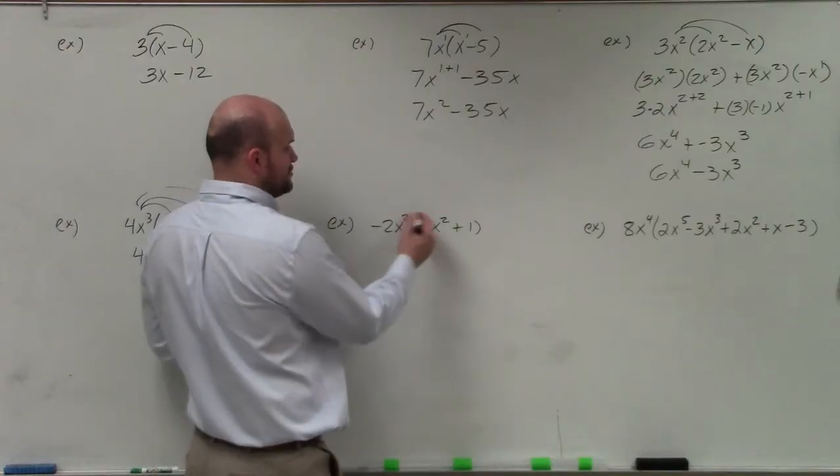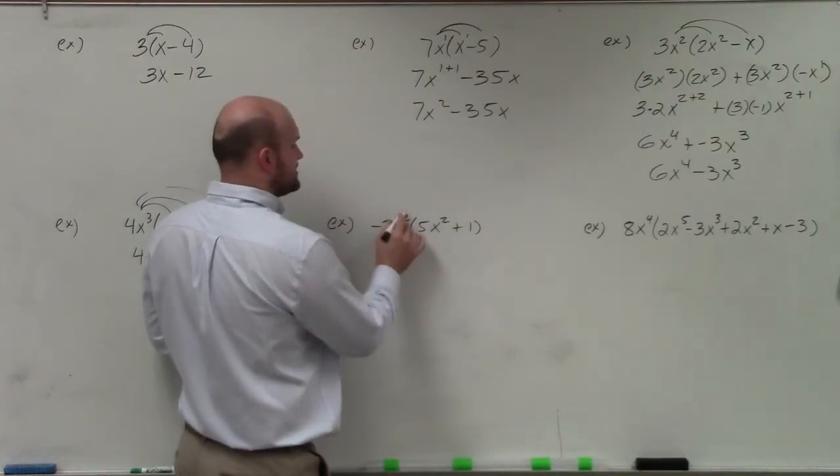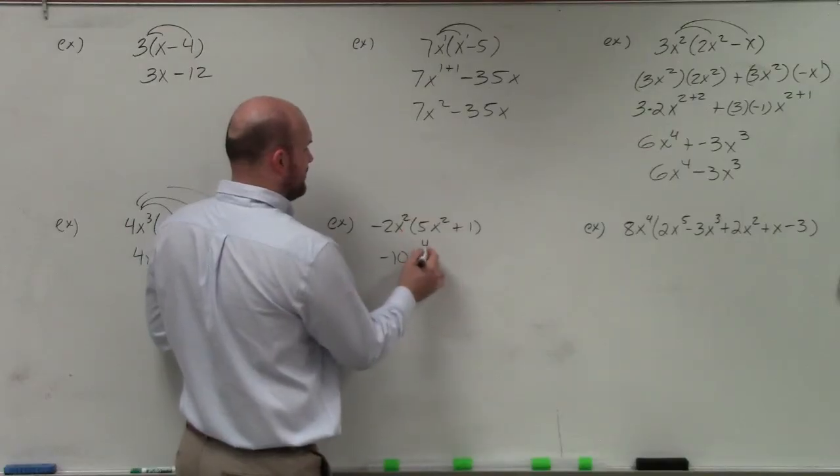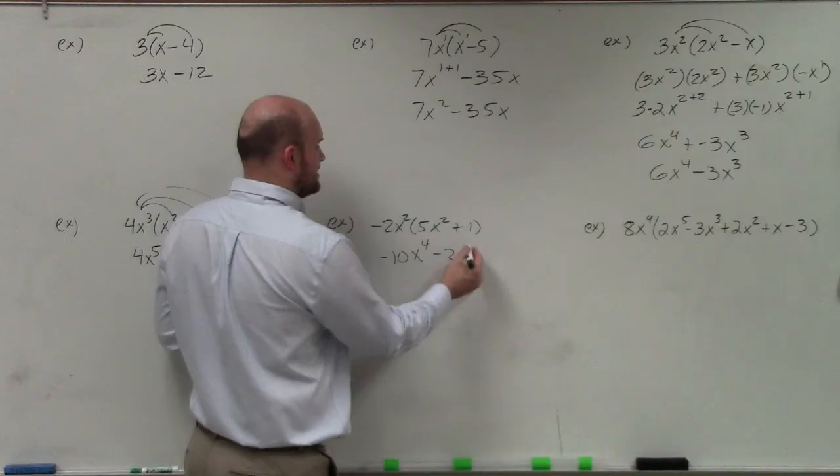Be careful when we have a negative. We want to make sure that we're distributing that negative. So negative 2 times 5 is a negative 10. x squared times x squared is going to be x to the fourth. And then negative 2x squared times 1 is just going to be a negative 2x squared.